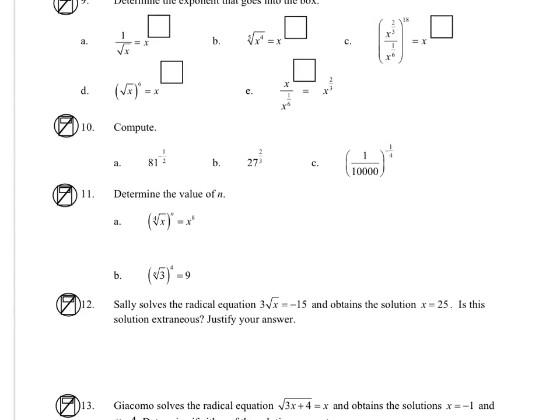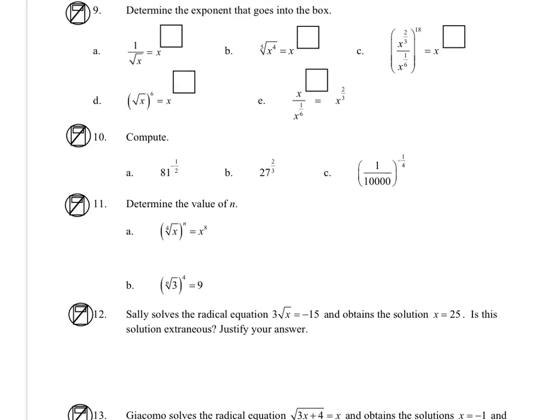For 10 to compute or simplify, we have 81 to the negative 1 half, so that means the negative exponent is going to move that to the denominator for us. And I'm going to think of the 1 half as a square root, and the square root of 81 is 9, so that's 1 ninth.